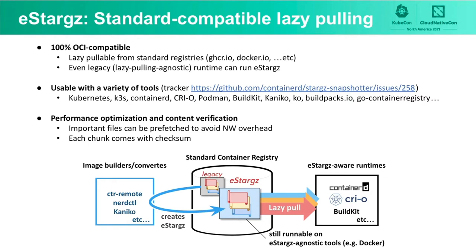Let's take a deeper look at eStargz image format. eStargz is backward compatible to the current OCI image specification, so it is lazy pullable from OCI compliant registries. Even legacy and lazy-pulling-agnostic runtimes can run this image as a non-lazy image. eStargz is now usable on a variety of tools, including Kubernetes, K3S, containerd, CRI-O, Podman, BuildKit, Kaniko, Ko, Buildpacks.io, GoContainerRegistry, etc.